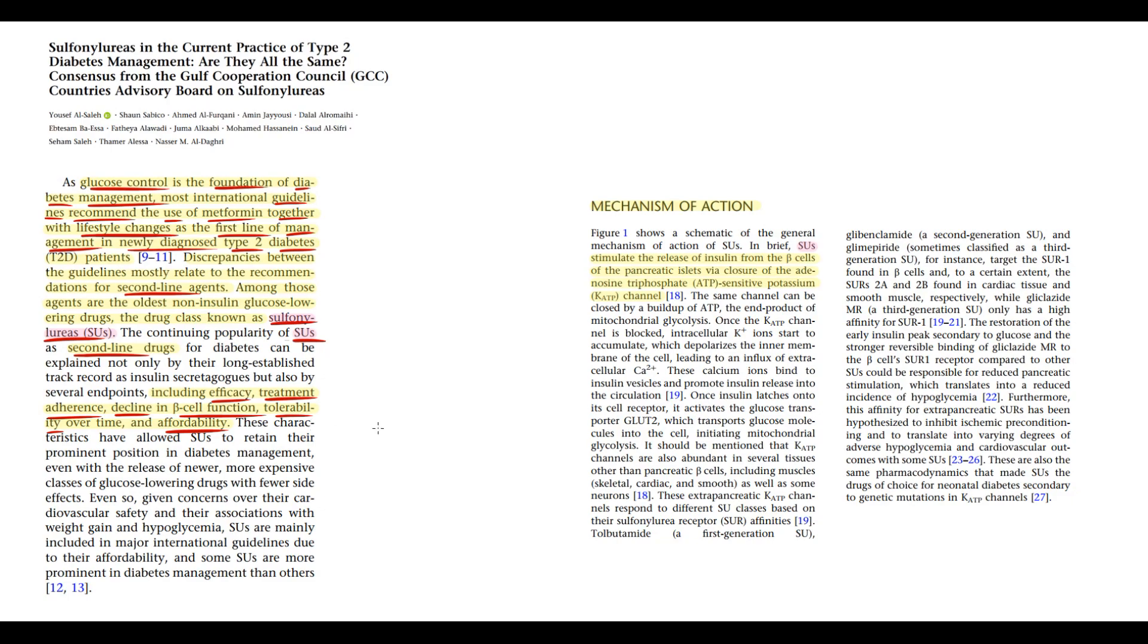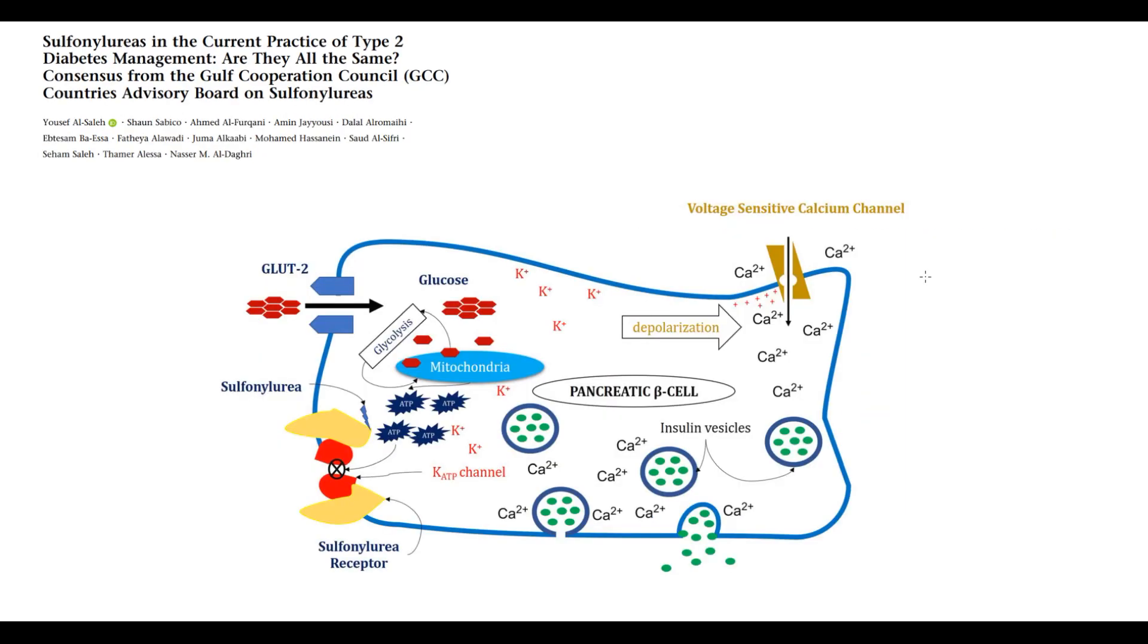The reason why sulfonylureas can cause increasing insulin secretion is their ability to close ATP-sensitive potassium channels. On this picture, we can see an overview of their mechanism of action. But for a better understanding, we will discuss their mechanism of action step by step.